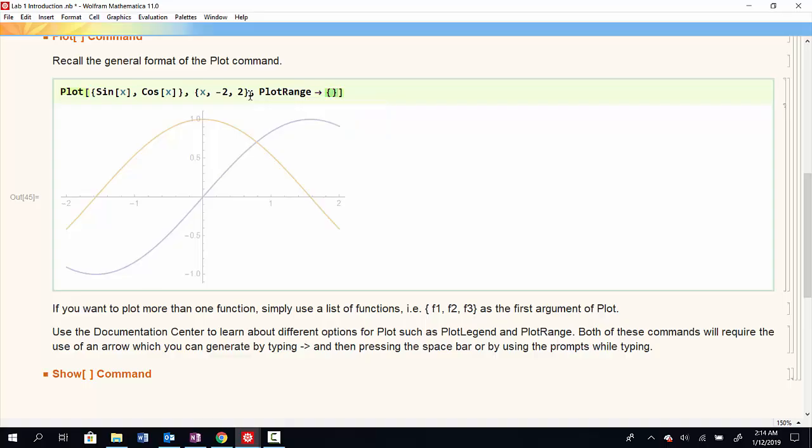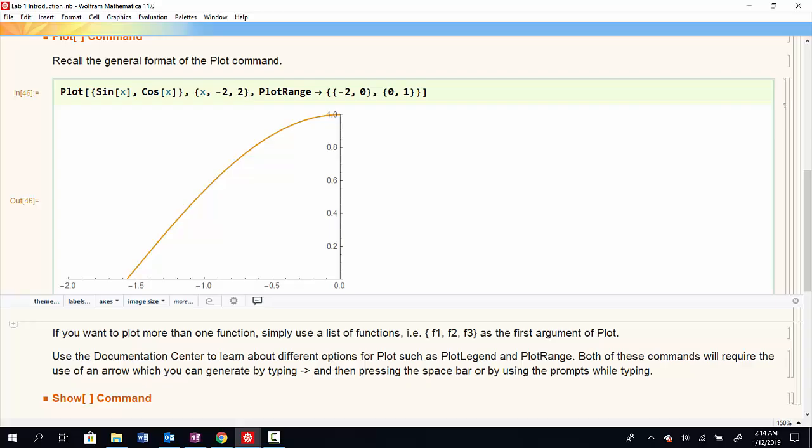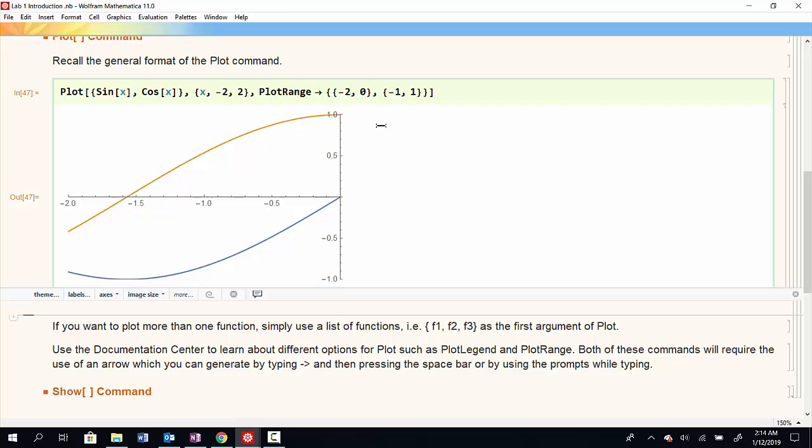And in PlotRange, I'll have a list of lists. So my first list will be a range of x values. In this case, let's restrict our range from negative 2 just to 0. And then the second list will be a range of y values. How about we restrict that to 0 to 1? And when I run that, I can now see the restricted plot range and viewing window. Let's make it a little bit bigger. Let's go from negative 1 to 1 on the y so we see both plots.